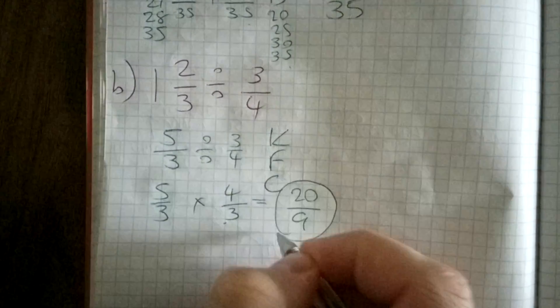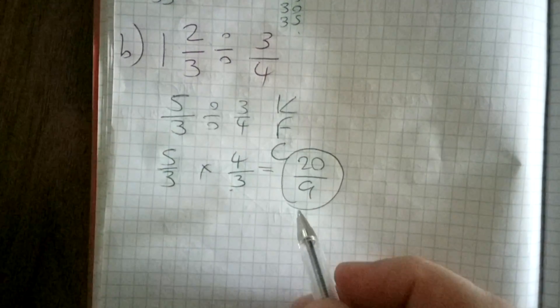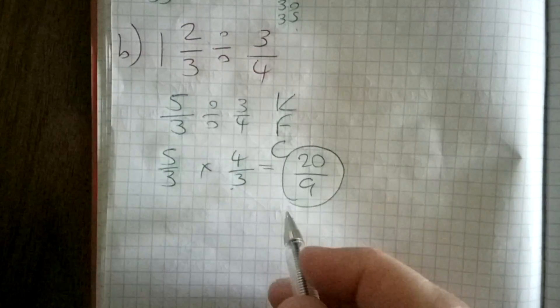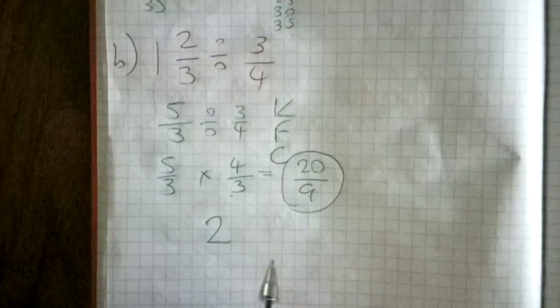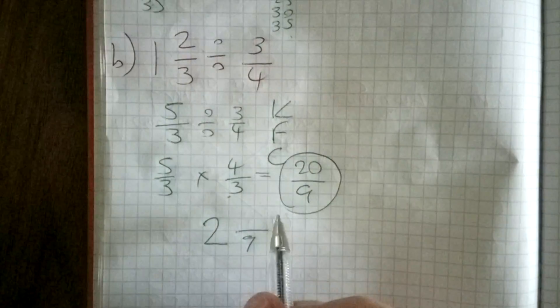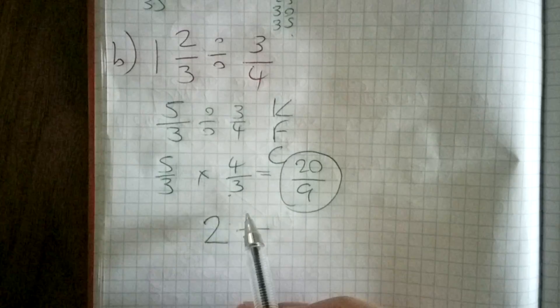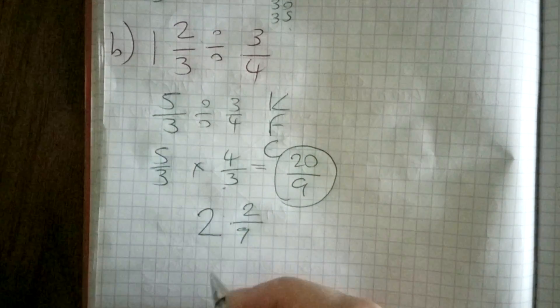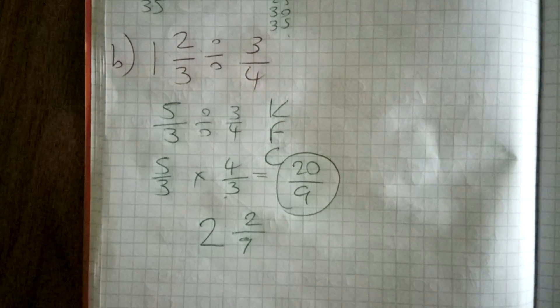Okay, now this is an acceptable answer, but if you wanted to change it to a mixed number, you say: how many times does 9 go into 20? Which is 2. 2 times 9 is 18, 19, 20 means you've got a remainder of 2. So it's 2 and 2/9. Both answers are the same.